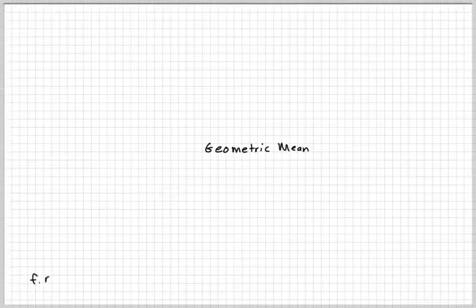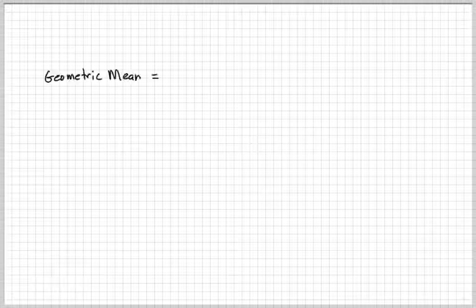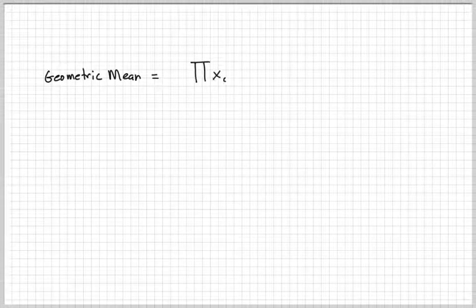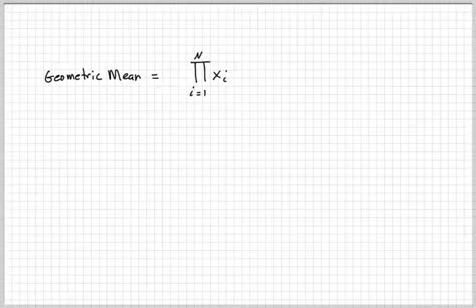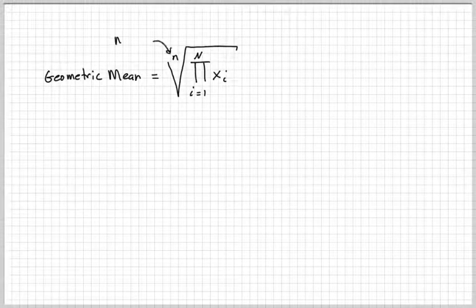In this video we're going to talk about the geometric mean. The geometric mean is the product of all the values that you have, starting with the first one, ending with the last one, and taking the nth root.